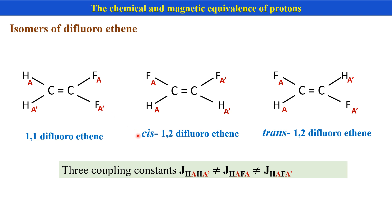This is also observed in the case of cis-1,2-difluoroethene and trans-1,2-difluoroethene. In that case also, the coupling of HA with FA is a geminal coupling, and HA with FA' is a vicinal trans-coupling.